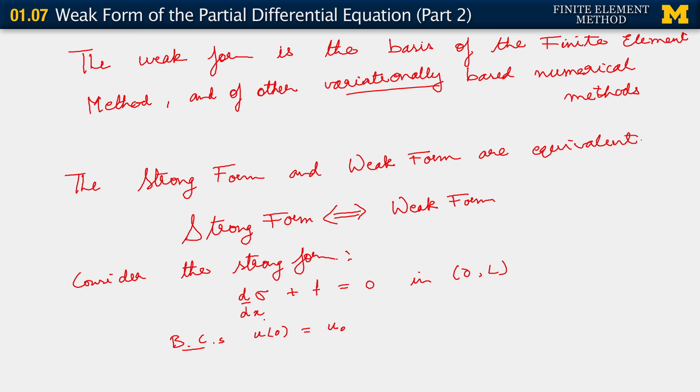We can't have different boundary conditions in the strong form and expect it to lead to the weak form that we wrote. So the boundary condition at x equals L is sigma at L equals t. And we need to remind ourselves that we also have the constitutive relation: sigma equals E u comma x. So this is where we start out. What we're going to demonstrate now is that this leads to the weak form.